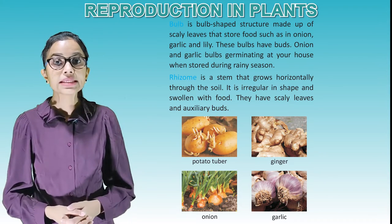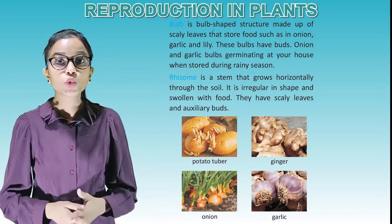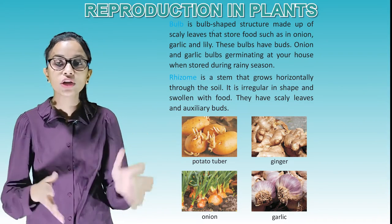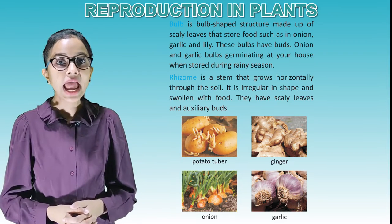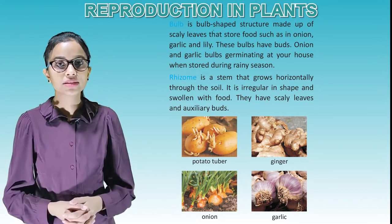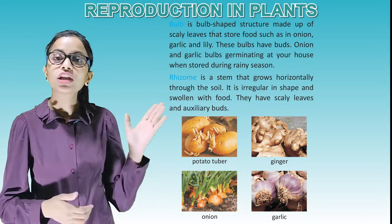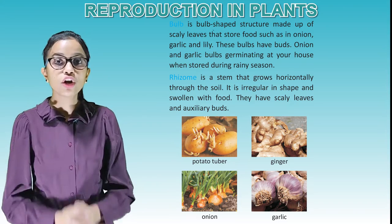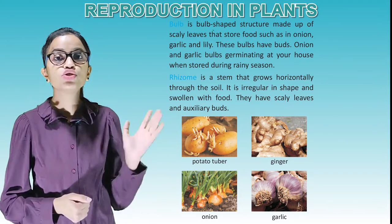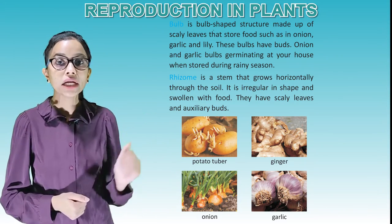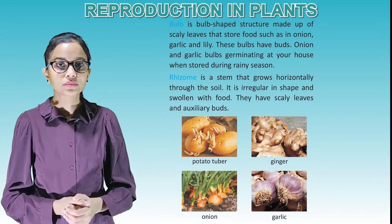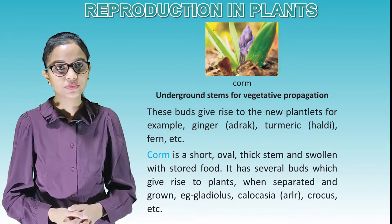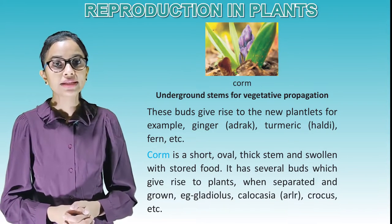A rhizome is a stem that grows horizontally through the soil. It is irregular in shape and swollen with food, and has scaly leaves and axillary buds. These buds give rise to new plantlets. For example, ginger (adrak), turmeric (haldi) and fern. A corm is a short, oval, thick stem swollen with stored food. It has several buds which give rise to plants when separated and grown — for example, gladiolus, colocasia and crocus.